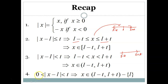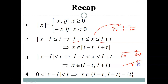Now if we write 0 < |x - l| < t, it means x lies in the deleted neighborhood of l. We are deleting the point l itself — if l is here, l+t is on one side and l-t on the other, and l is excluded. So x belongs to either side but not to l itself.